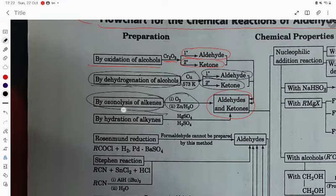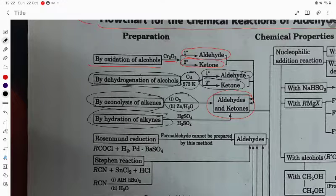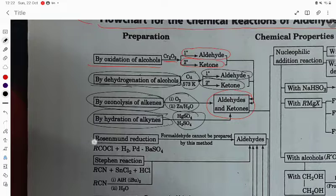By hydration of alkyne, you can also prepare carbonyl compounds. If you are taking HgSO4 and H2SO4, it will give aldehydes and ketones.